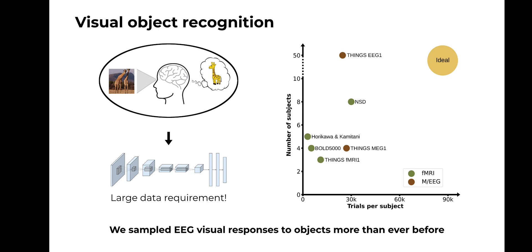Therefore, to contribute to this ideal, we collected a large and rich dataset of EEG responses to images of objects, to better bridge the neural dynamics of the visual brain on the one hand, and state-of-the-art computational models on the other. The stimuli of our dataset all consisted of images of objects on natural backgrounds, and since model building involves independent training and testing phases, we divided the stimuli images into training and test splits.